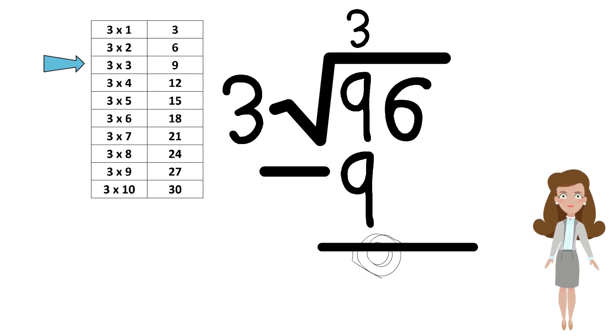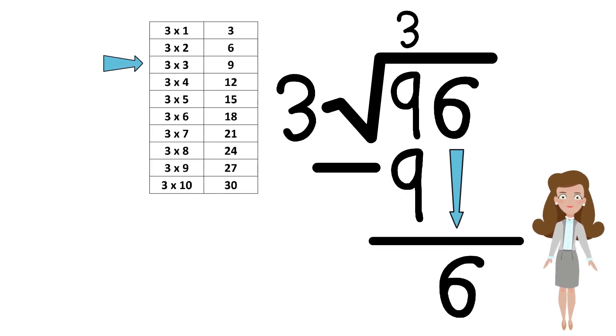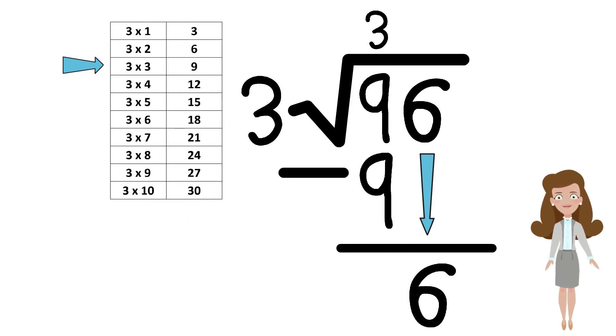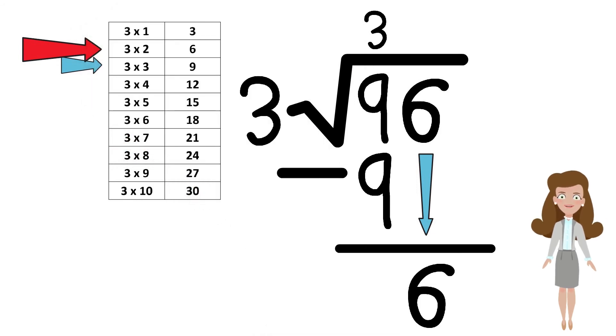Bring down the 6. Like we did earlier, let's check back with the 3 times table. Do you see a result of 6 anywhere in the 3 times table? Yes, correct. We see that 3 multiplied by 2 gives us 6.